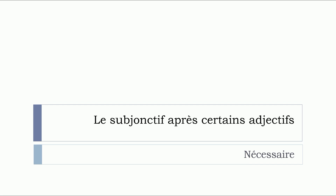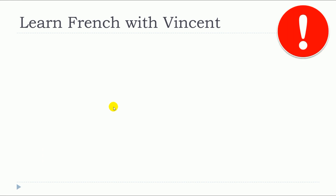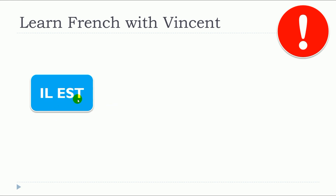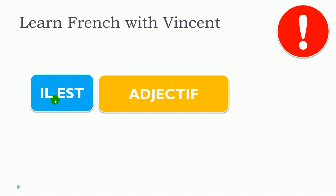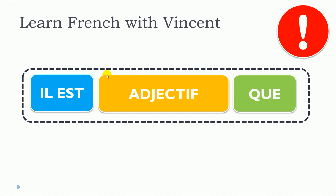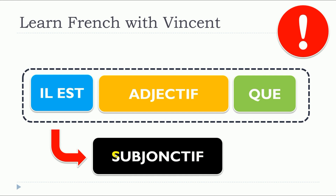In this lesson, we will see together le subjonctif après certains adjectifs, and more precisely we will see NÉCESSAIRE. The important thing to remember is that we will structure our sentence in this way: we start with IL EST — remember that in this case IL stands for IT and not HE — then we put the adjective, then QUE, and after that we introduce the subjonctif. So the verbs that come after this structure will be in the subjonctif.